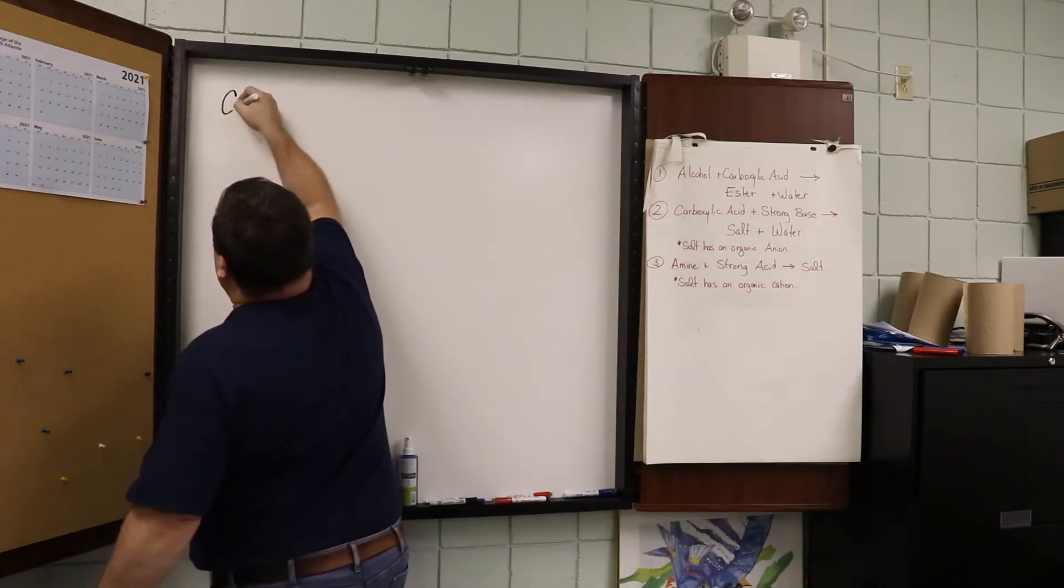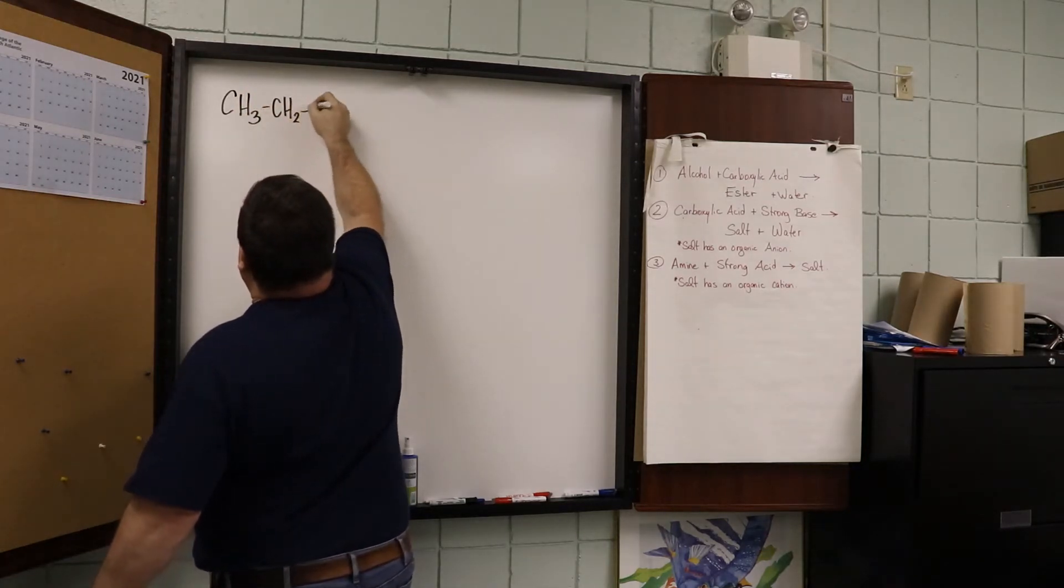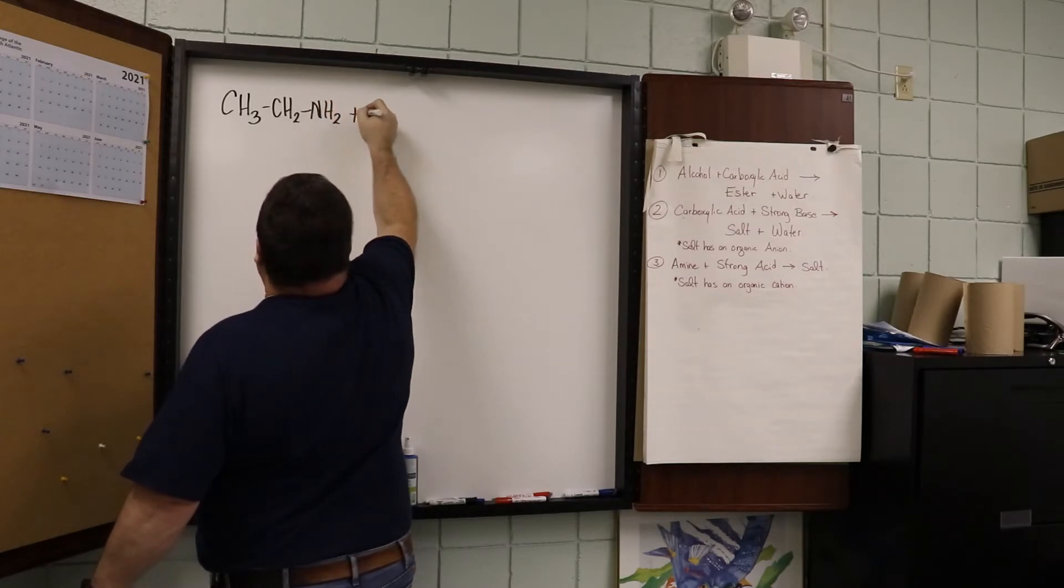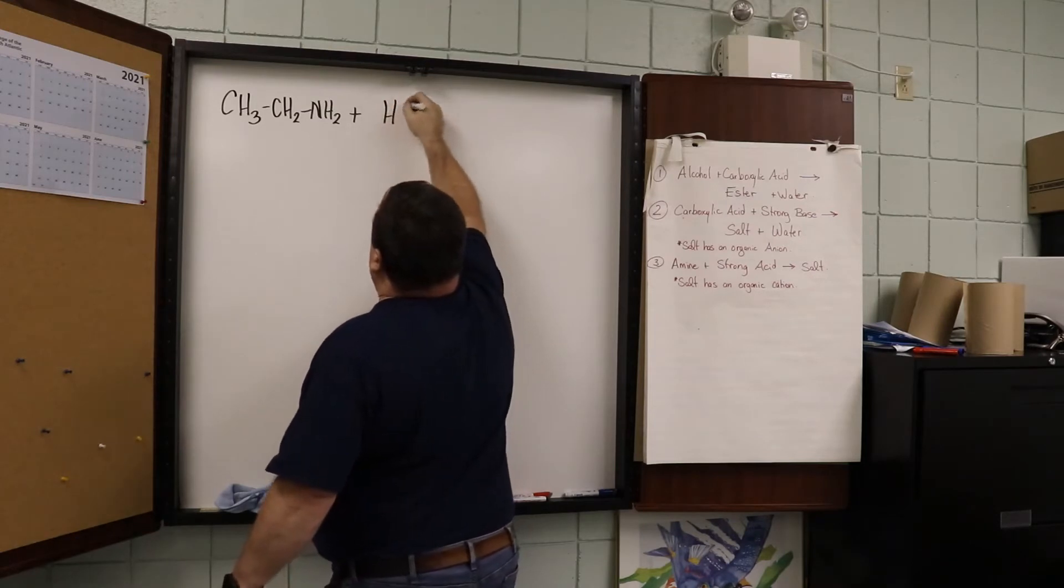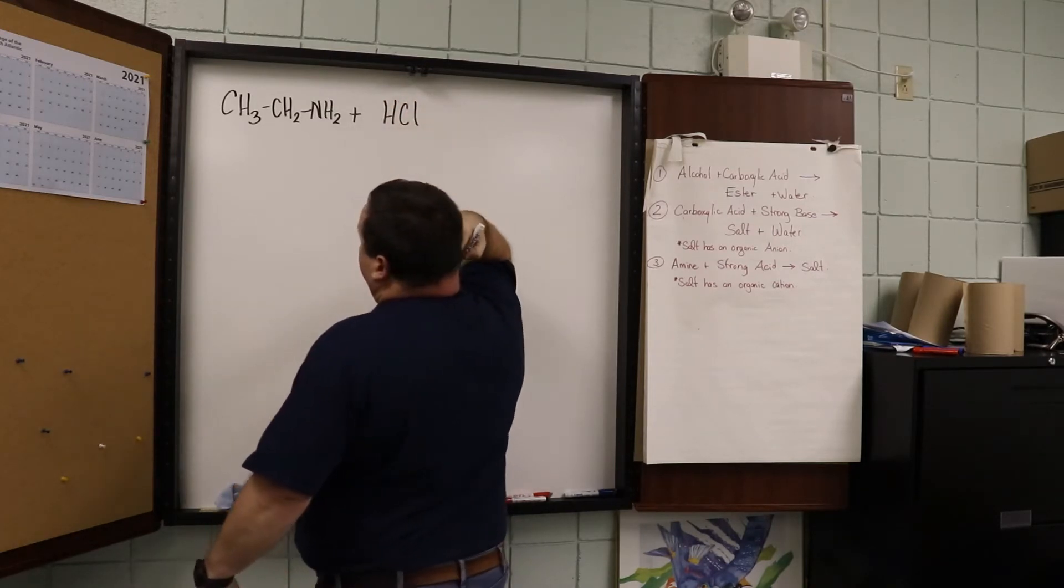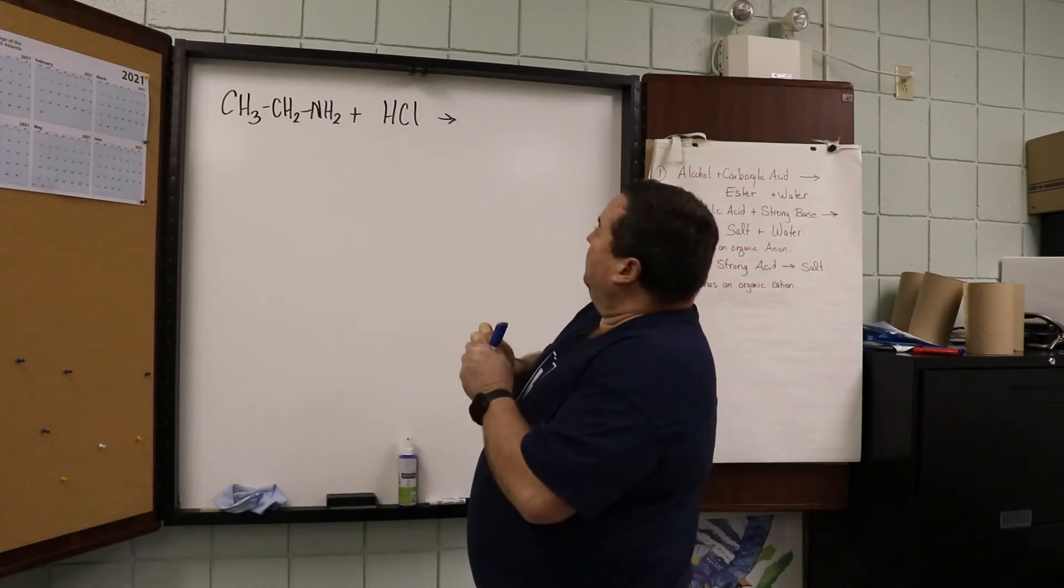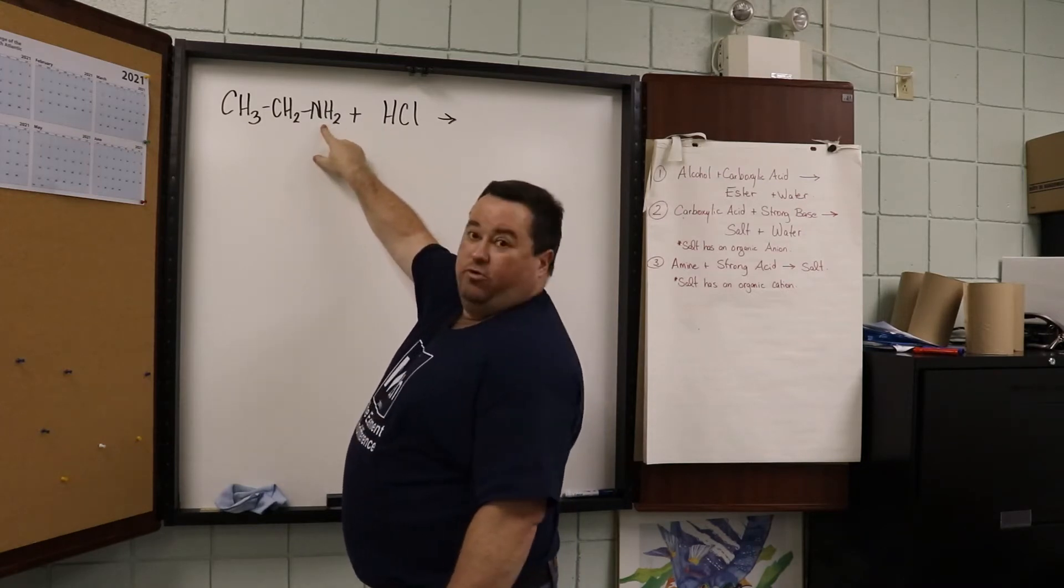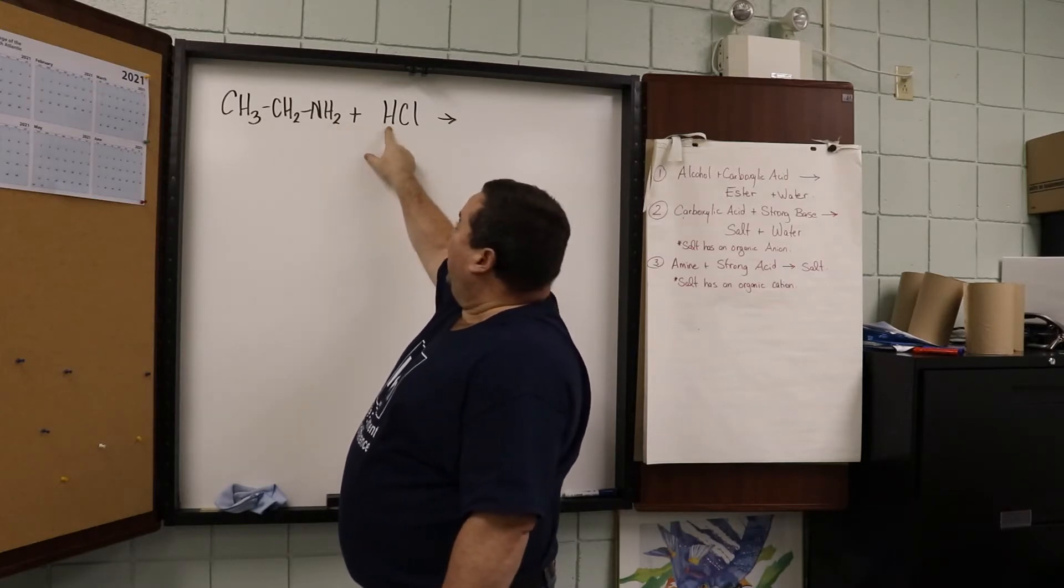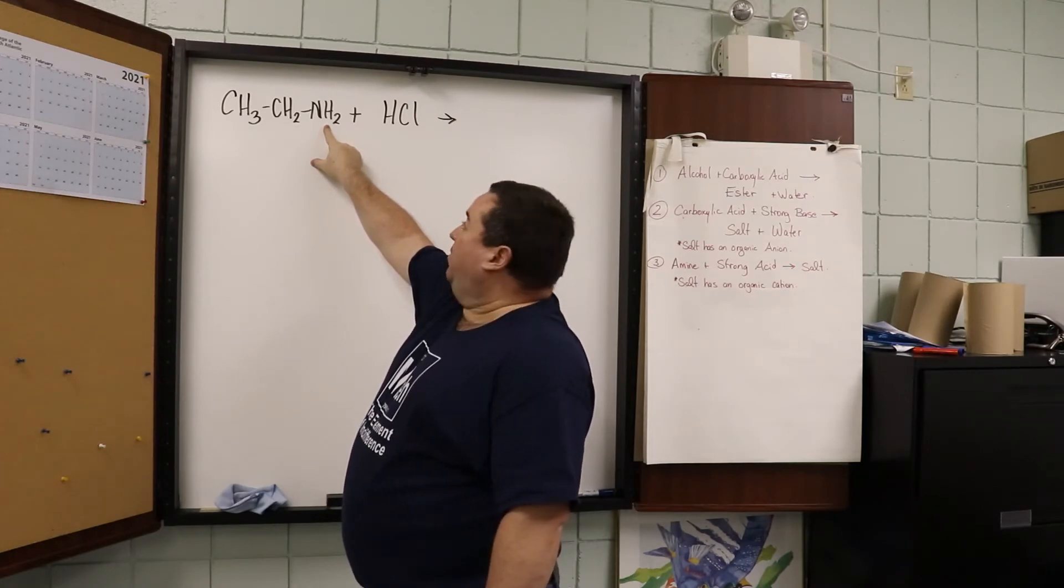So if I have a two carbon amine and I add a strong acid like HCl, the hydrogen ion from the HCl will join with the amine group, so it will become NH3. And because the hydrogen ion carries a positive charge, this NH3 group will carry a positive charge.